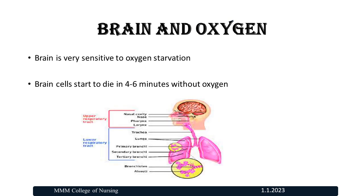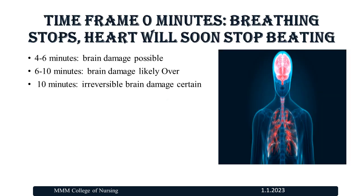Brain and oxygen: the brain is very sensitive to oxygen starvation. Brain cells start to die in 4 to 6 minutes without oxygen. Time frame: 0 minutes — breathing stops, heart will soon stop beating. 4 to 6 minutes — brain damage possible. 6 to 10 minutes — brain damage likely. Over 10 minutes — irreversible brain damage certain.